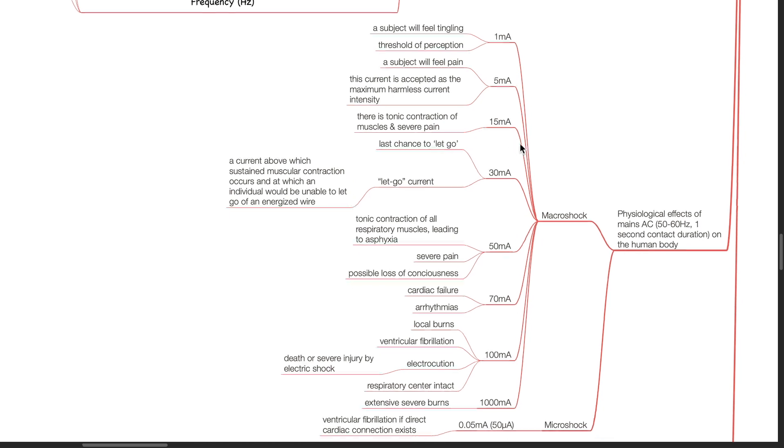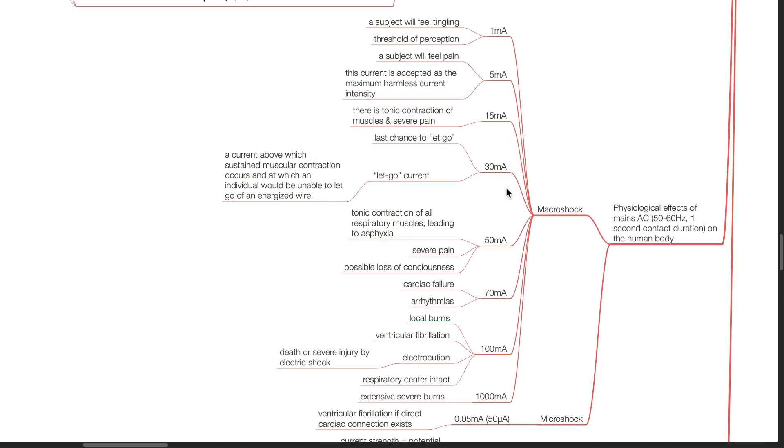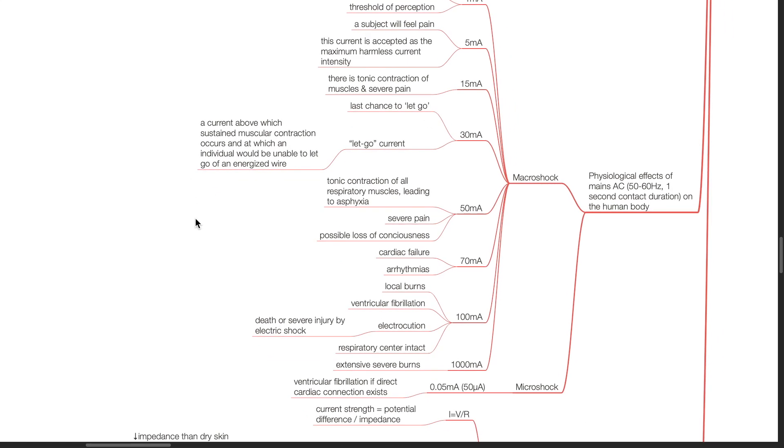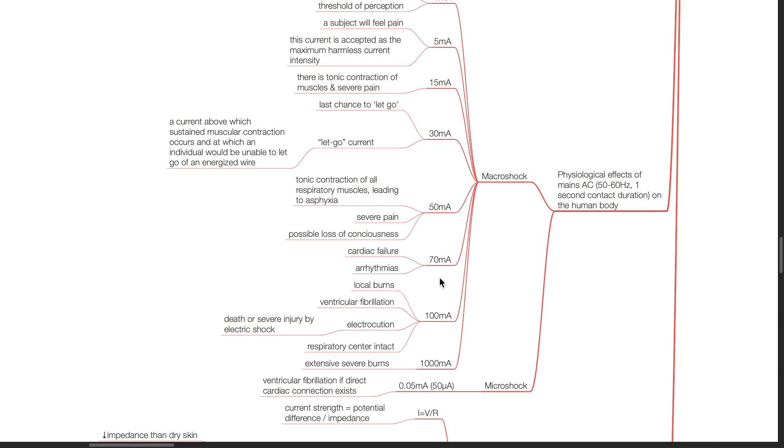At 30 mA, last chance to let go. The let-go current is a current above which sustained muscular contraction occurs and at which an individual will be unable to let go of an energized wire. At 50 mA tonic contraction of all respiratory muscles occur leading to asphyxia. There will be severe pain and possible loss of consciousness. At 70 mA, there will be cardiac failure and arrhythmias. At 100 mA, local burns, ventricular fibrillation and electrocution occurs. Respiratory center remains intact.